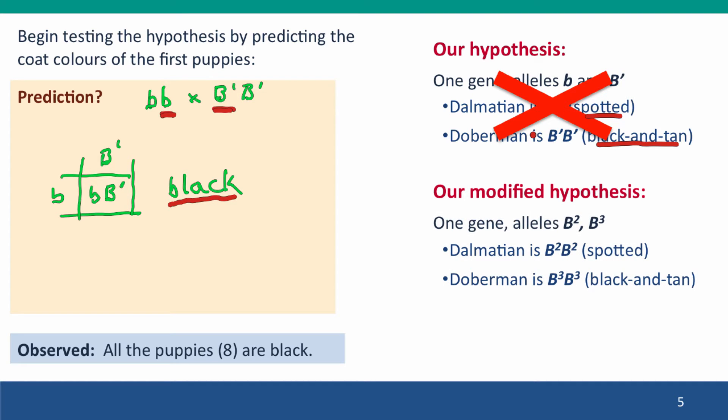Let's discard our nomenclature, but not our hypothesis yet. Let's just change the names of the alleles. Instead of little b and b', let's just call them b2 and b3. We can easily modify: b2b2 times b3b3 gives b2b3, b2b3. And now we're saying that the heterozygote b2b3 is black. That looks okay so far.